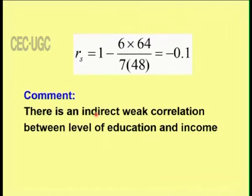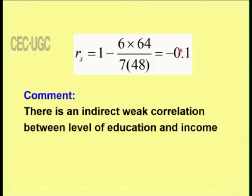Interpreting the result: the minus sign indicates a negative correlation, and 0.1 indicates a weak correlation. Therefore, we conclude there is an indirect (negative) weak correlation between education qualification and income. There is not much correlation between these two variables. We must be cautious — correlation does not imply cause and effect. Educational level and income may or may not cause each other; by correlation alone we cannot conclude that one is causing the other.